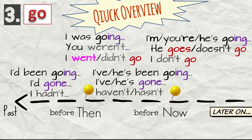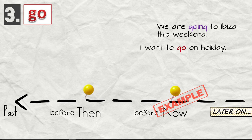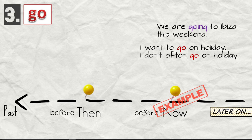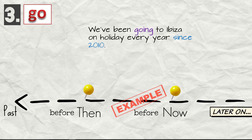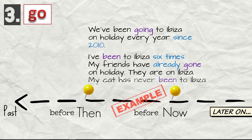We are going to Ibiza this weekend. I want to go on holiday. I don't often go on holiday. My cat never goes on holiday. We've been going to Ibiza on holiday every year since 2010. I've been to Ibiza six times. My friends have already gone on holiday. They are on Ibiza. My cat has never been to Ibiza.